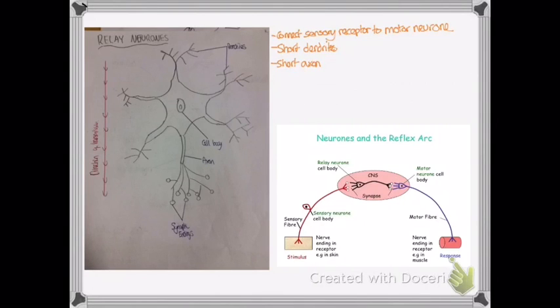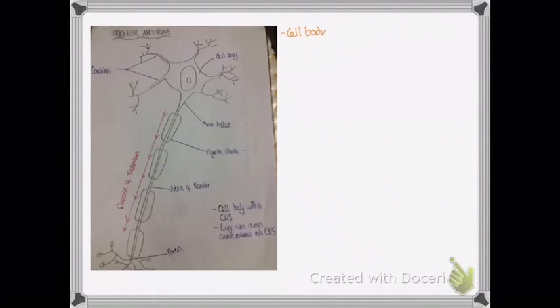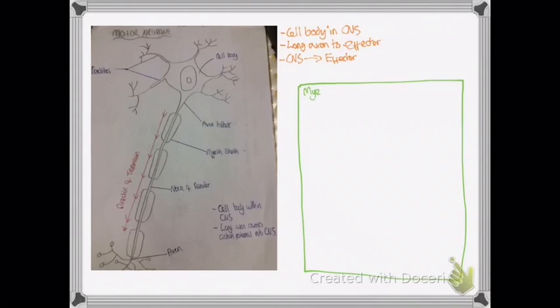The motor neuron is our final neuron. It connects sensory and motor neurons. The cell body is within the central nervous system, and it's got a long axon to the effector. Motor neurons can be up to one meter long, which is pretty far considering they're like single cells.